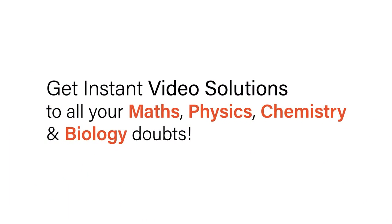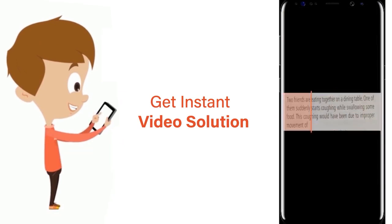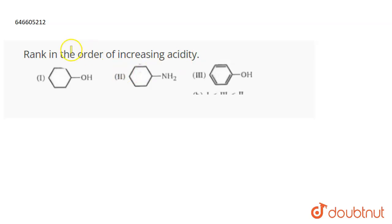With DoubtNet, get instant video solutions to all your maths, physics, chemistry, and biology doubts. Just click the image of the question, crop it, and get instant video solution. Download DoubtNet app today. The question is: rank in the order of increasing acidity.